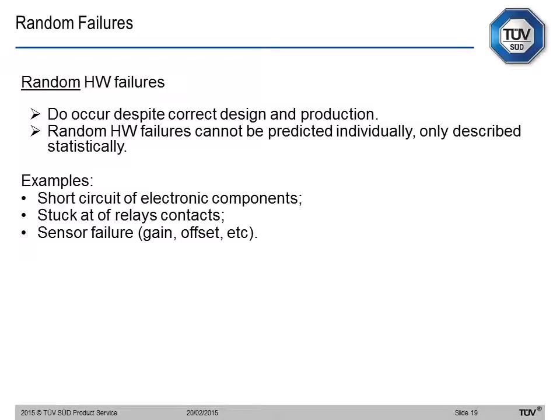Random failures occur despite correct design and production — they just happen and cannot be predicted individually, but can only be described statistically. Examples include short circuits or a stuck relay. Although we can take measures to prevent a short circuit through a good PCB layout, if the short circuit happens because a component is electrically or mechanically stressed in a way not included in our design process and verification, we still have this random failure. We don't live in a perfect world.